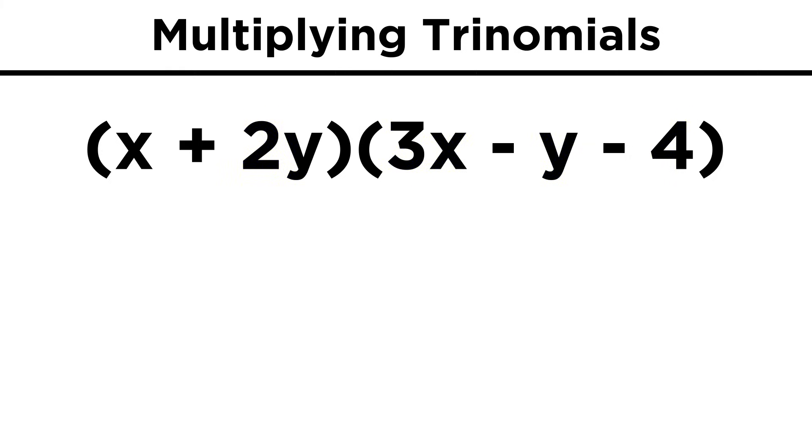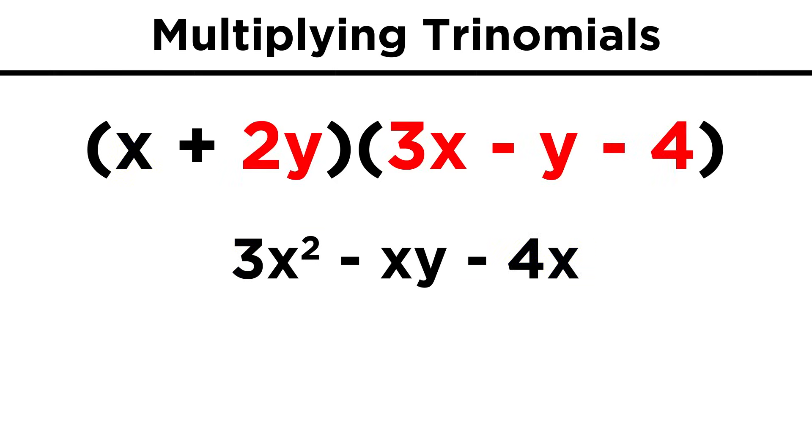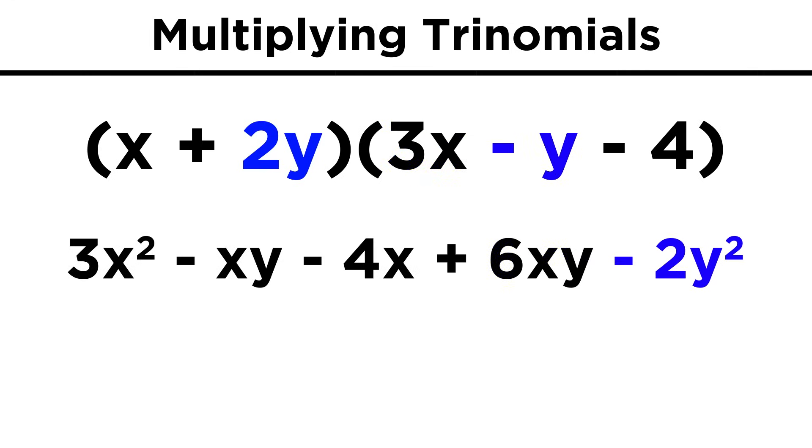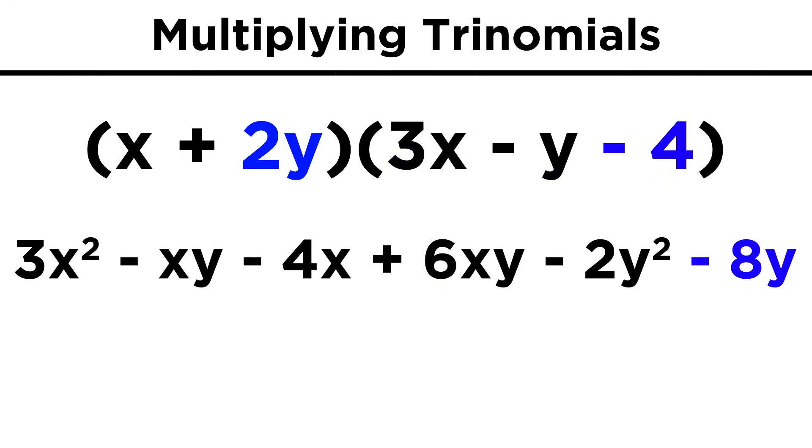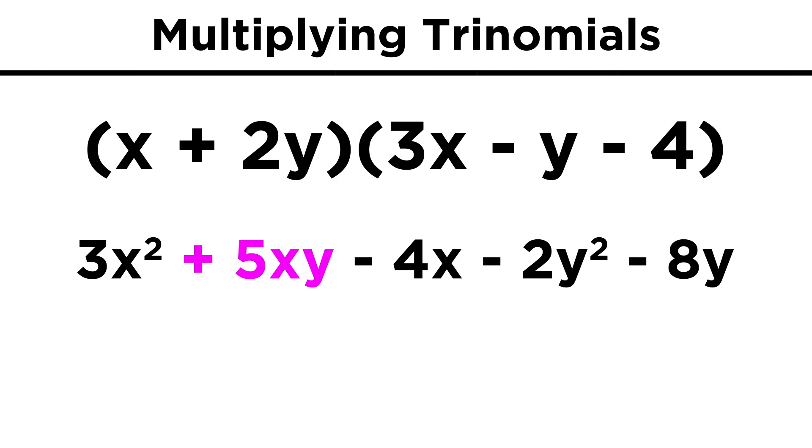For example, x plus two y times three x minus y minus four. First, let's multiply x across the trinomial. That gives us three x squared minus xy minus four x. Then we just continue this list of terms by multiplying two y across the trinomial. That will be six xy minus two y squared minus eight y. There are two like terms to combine, the xy terms. Six xy minus one xy gives five xy.